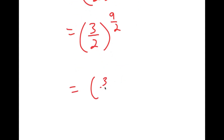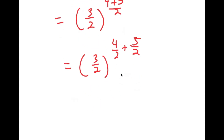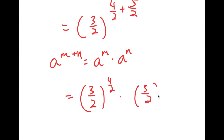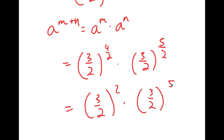Now, 9 over 2 is the same thing as 4 plus 5 over 2, which is equal to 4 over 2 plus 5 over 2. If I have something in the form a to the power of m plus n, this is equal to a to the power of m times a to the power of n. So this is going to equal 3 over 2 to the power of 4 over 2 times 3 over 2 to the power of 5 over 2. Since 4 over 2 is equal to 2, I get 3 over 2 squared times 3 over 2 to the power of 5 over 2.